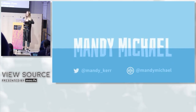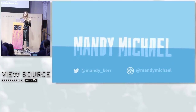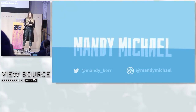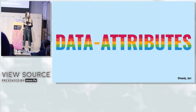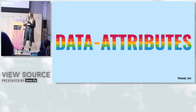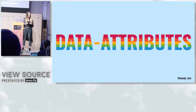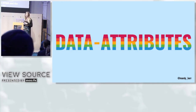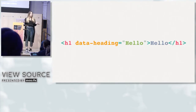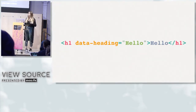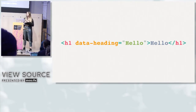So how do we make text effects with CSS? There are two things we need. The first is data attributes. A data attribute is a custom attribute that allows us to exchange information between the HTML and the DOM. In our case, we're going to use it to share the content of our HTML element with our CSS. You add it onto your HTML element — in this case an h1 — always prefix it with 'data-', and you can call it whatever you want: heading, Mandy, Batman, whatever suits you.